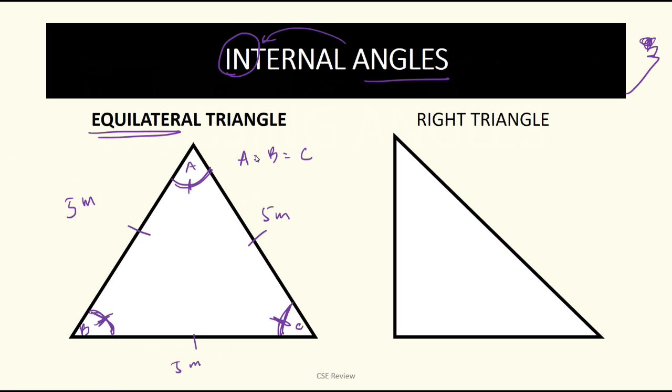Now, here's the thing. Sa equilateral triangles, all of the angles amount to one thing. Lahat ng angles ng equilateral triangle, basically, are 60 degrees each. It's 60 degrees sila.